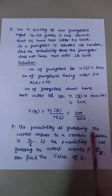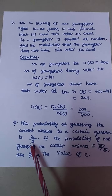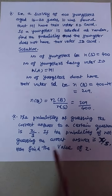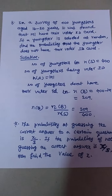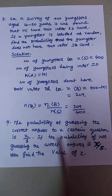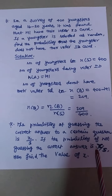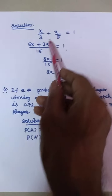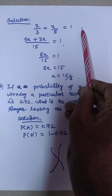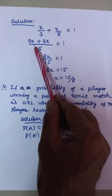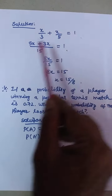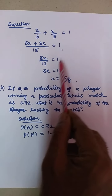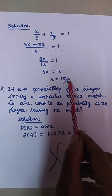Next problem: The probability of guessing the correct answer to a certain question is X by 3. If the probability of not guessing the correct answer is X by 5, find the value of X. Solution: X by 3 plus X by 5 equals 1. So 5X plus 3X all over 15 equals 1, giving 8X by 15 equals 1. Therefore 8X equals 15, and X equals 15 by 8.